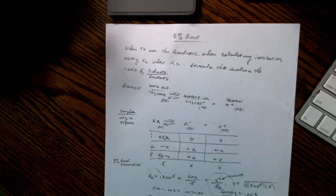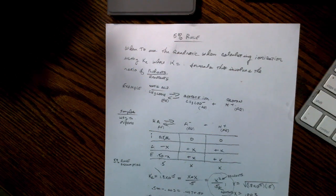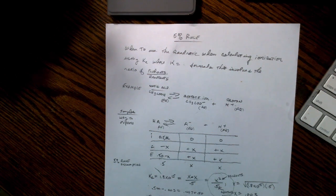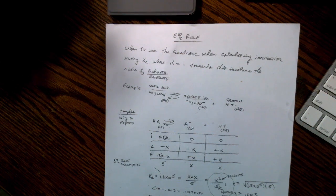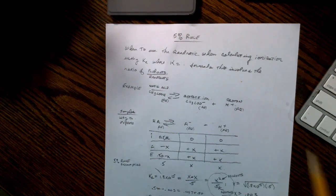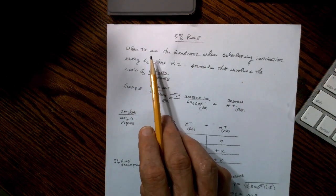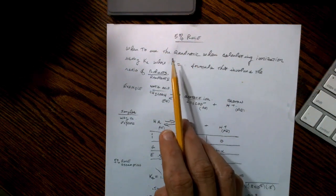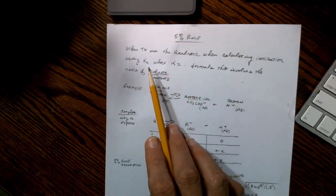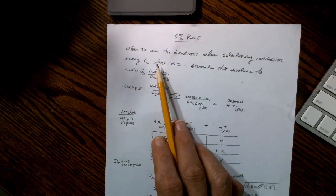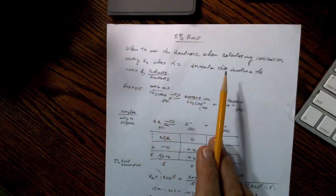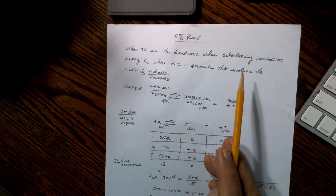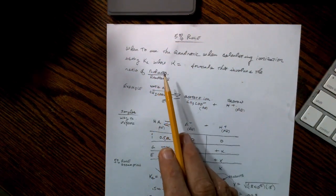They use false reasonings. Sometimes they're right, sometimes they're not. We'll try to keep this short. So what we have here is this is the 5% rule. We're saying when to use the quadratic, and we do not want to use the quadratic in this case. Using KC, K sub C, that's the equilibrium constant, where K is basically a formula that involves the ratio of the products over the reactant.